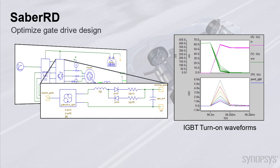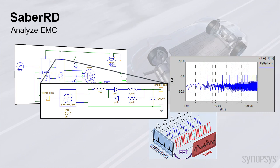Sabre RD helps to optimize multiple parameters for the gate drive so that switching losses are minimized. Optimized gate drive helps to reduce switching transients and improves electromagnetic compatibility.